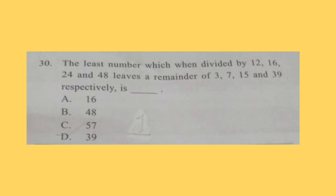Question 30: The least number which when divided by 12, 16, 24, and 48 leaves a remainder 3, 7, 15, and 39 respectively is. You can pause the video and calculate it. Try to find out the answer yourself. Correct answer is option D, 39. When 39 is divided by 12, remainder will be 3. When 39 is divided by 16, remainder is 7. Divided by 24, remainder will be 15. And when it is divided by 48, remainder will be 39 itself.